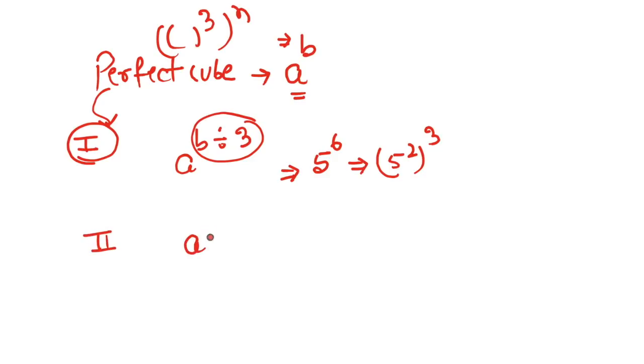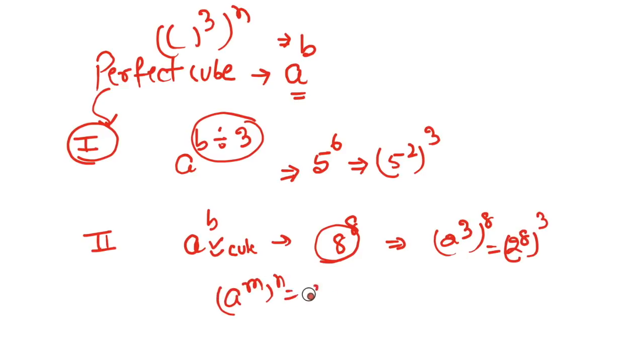Case number 2: when base is a perfect cube in itself. For example, 8 raised to power 8 is a perfect cube. How? We can write 8 as 2 cubed raised to power 8, and if we interchange the power, this is 2^8 raised to power 3. So this is a perfect cube of 2^8, because we know (a^m)^n is a^(m×n) or a^(n×m). By this calculation, we can say 8 raised to power 8 is a perfect cube.